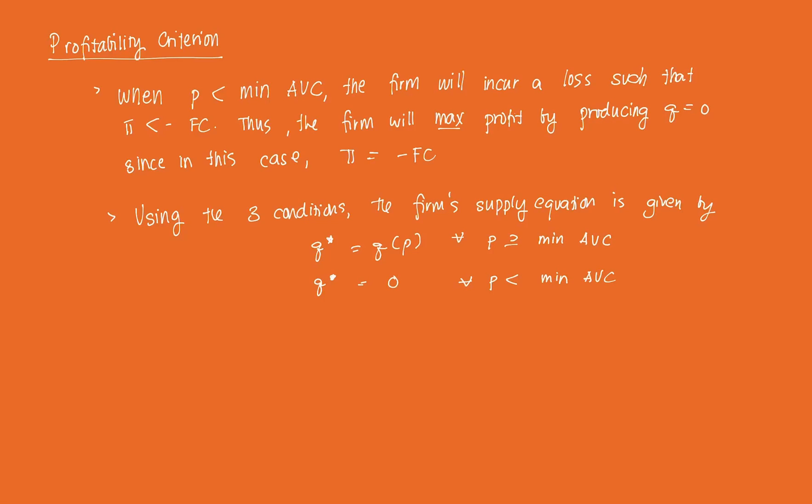In the last video, we discussed that the firm's goal is to maximize profit, and we got the first order condition and second order condition. The first order condition suggests that P should equal SMC, and the second order condition guarantees that the SMC curve, or short run marginal cost, should be upward sloping.